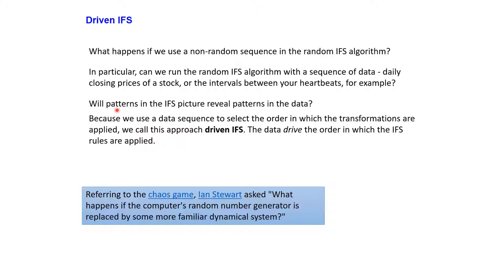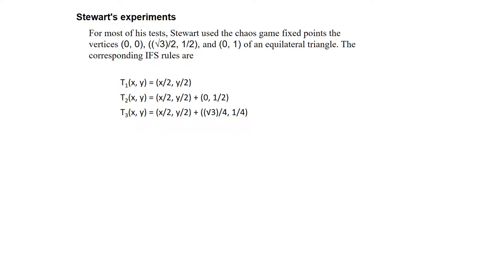Our hypothesis is that the patterns in the resulting IFS picture should reveal the patterns in the data — what patterns are inhibited in the data. Since we are using a data sequence to select the order in which the transformations are applied: if you have four transformations applied randomly, you create a random IFS. If you apply them in an order governed by the data sequence or time series, this is called the driven IFS, because the data sequence drives the order in which the IFS rules are applied.